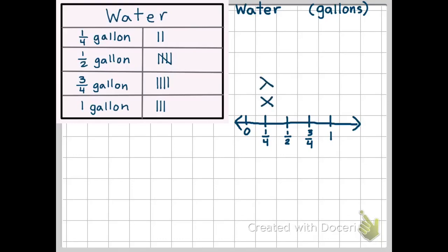Using my data I've collected, I know that there were two days where I drank one-fourth of a gallon of water. So I had two tally marks, and I put two X's on top of the one-fourth. For one-half a gallon, I have five tally marks, so I'm going to put five X's under one-half of a gallon. For three-fourths, I have four boxes, and there were three days that I drank one whole gallon.